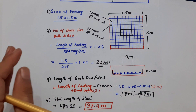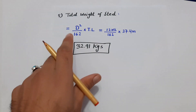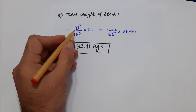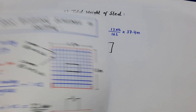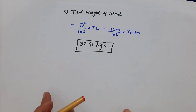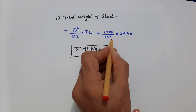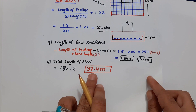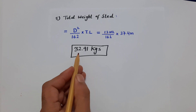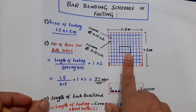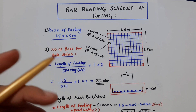On the next page, step five is the total weight of steel. The formula is D² divided by 162, multiplied by total running length. The diameter is 12 millimeters for both main bars and distribution bars. So: (12 × 12) ÷ 162 × 37.4 = 32.91 kg of steel required for this RCC footing.